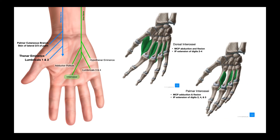The last motor branch goes to the interossei. We have dorsal interossei and palmar interossei. The dorsal interossei allow abduction and flexion at the metacarpophalangeal joints, and extension of these digits at the interphalangeal joints. The palmar interossei allow adduction and flexion at the metacarpophalangeal joints, and extension of digits two, four, and five at the interphalangeal joints.